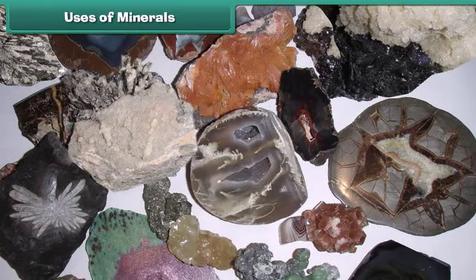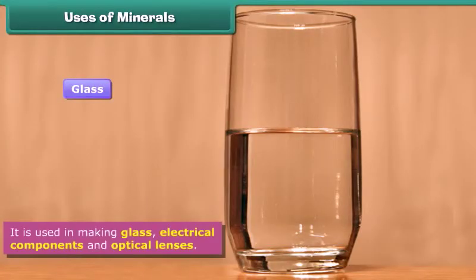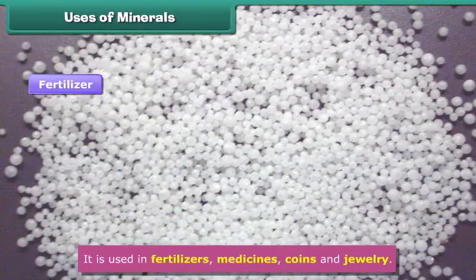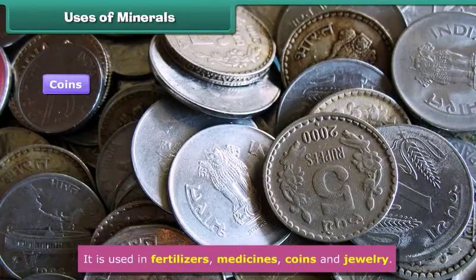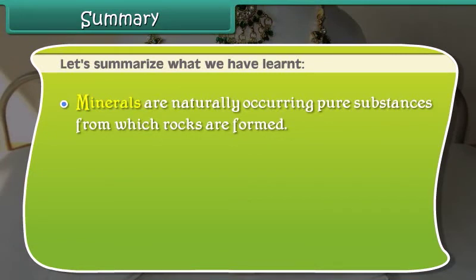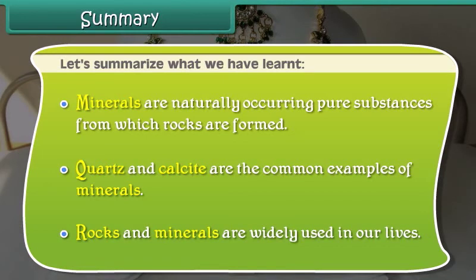Uses of minerals. Minerals play an important role in our lives. Minerals are used in the production of cement, and in making glass, electrical components, and optical lenses. They are also used in fertilizers, medicines, coins, and jewelry. Minerals are naturally occurring pure substances from which rocks are formed. Quartz and calcite are common examples of minerals. Rocks and minerals are widely used in our lives. Thank you.